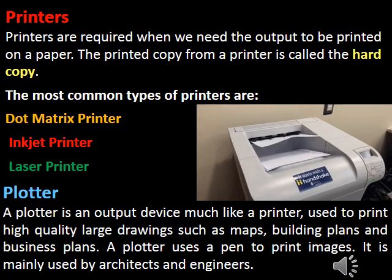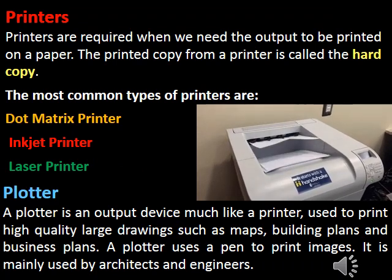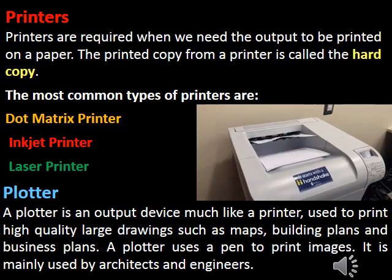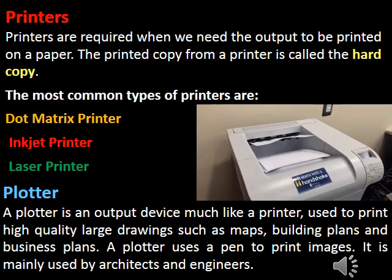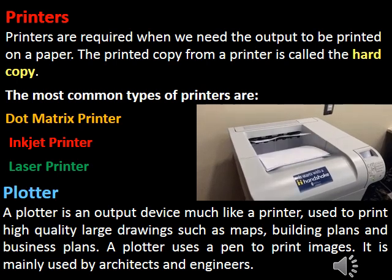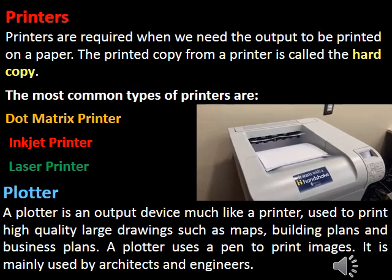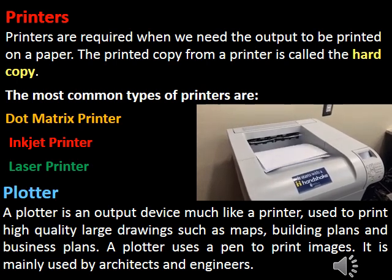The second output device is printers. Printers are required when we need the output to be printed on paper. The printed copy from a printer is called the hard copy. The most common types of printer are dot matrix printer, inkjet printer and laser printer.